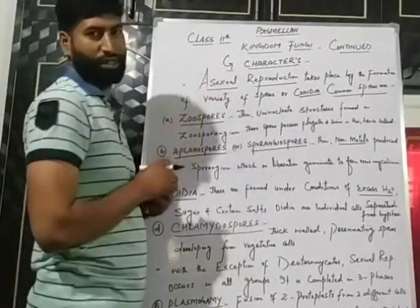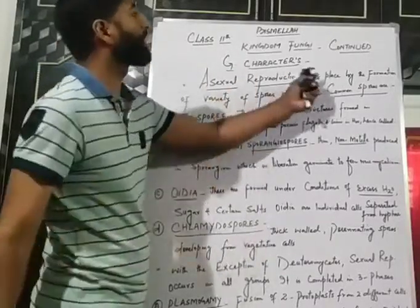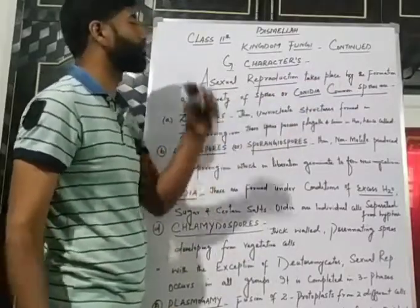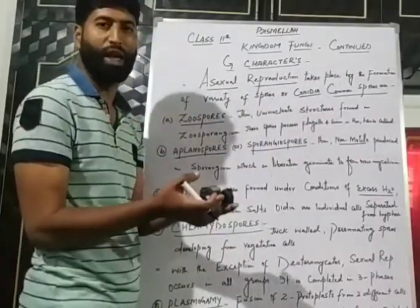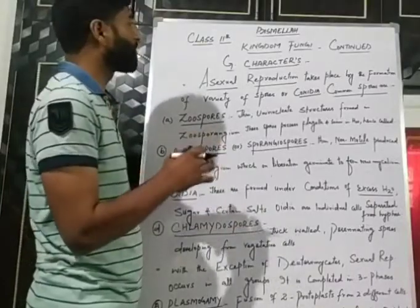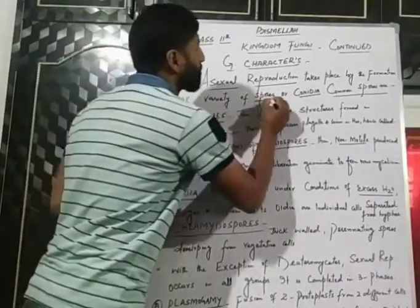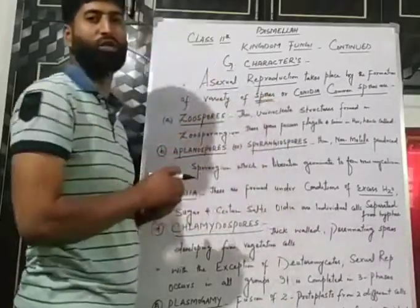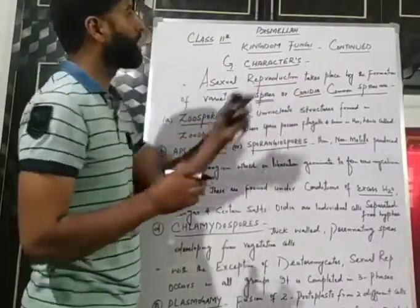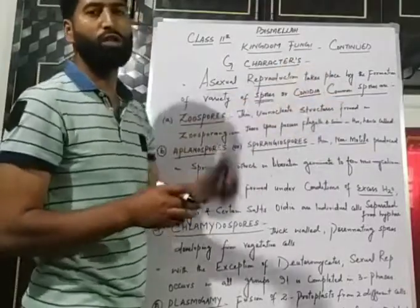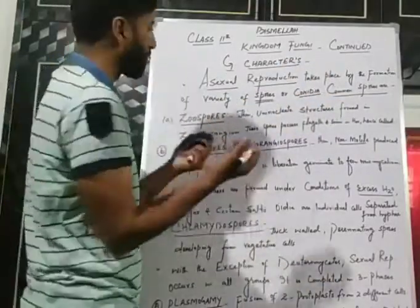Asexual reproduction takes place by the formation of a variety of spores. In fungi, it takes place by the help of a variety of spores, including conidia.